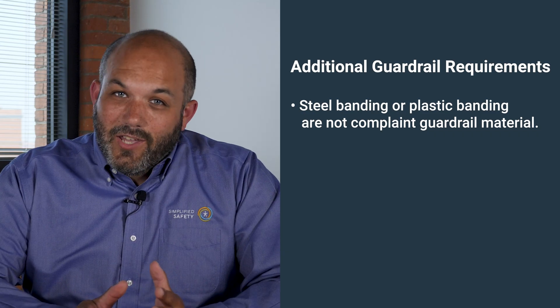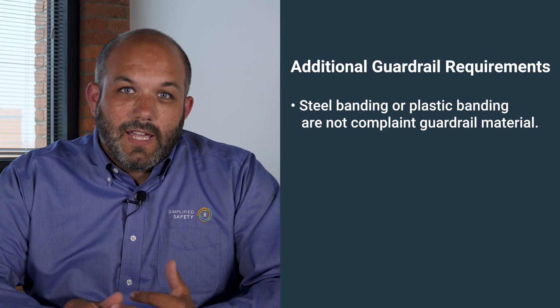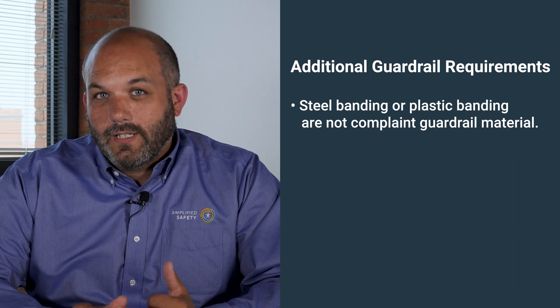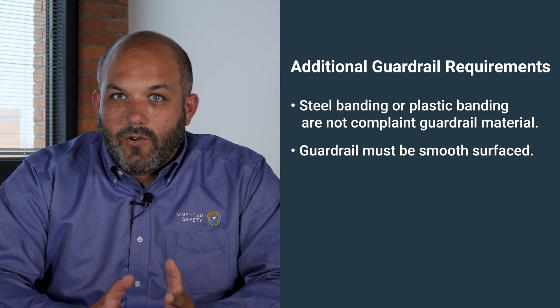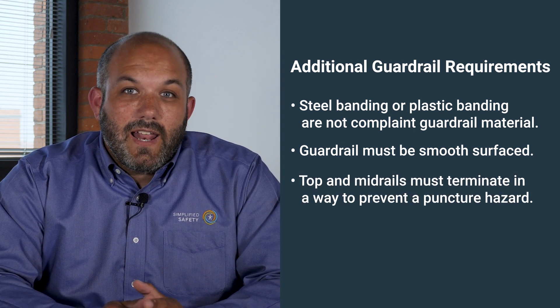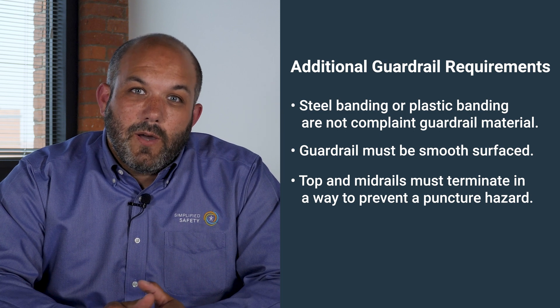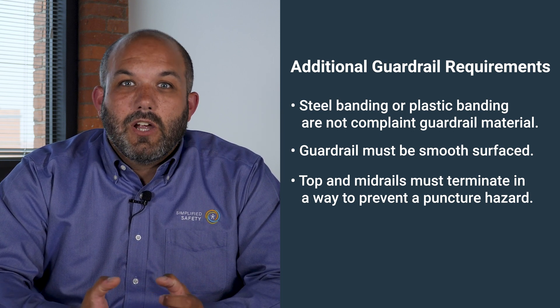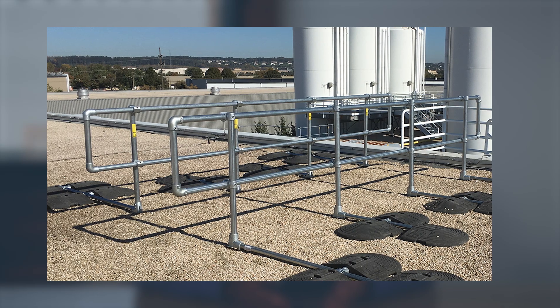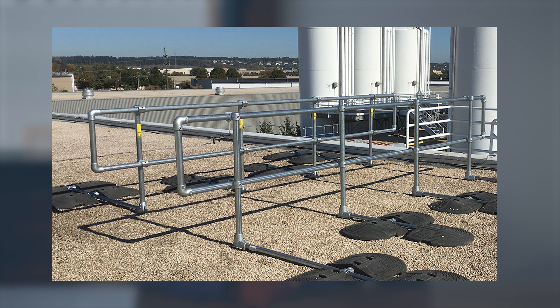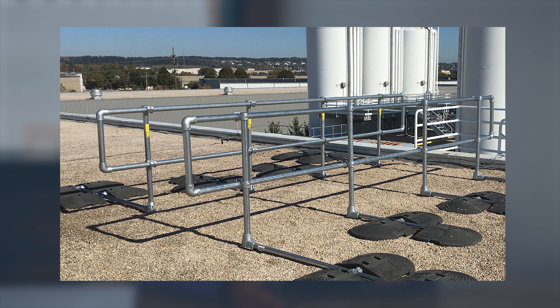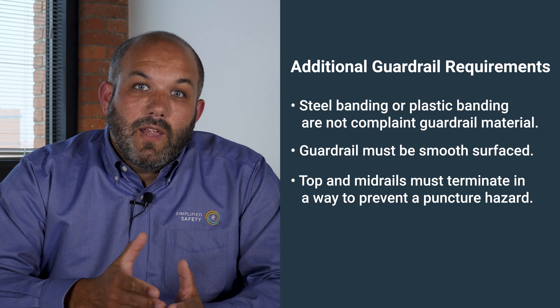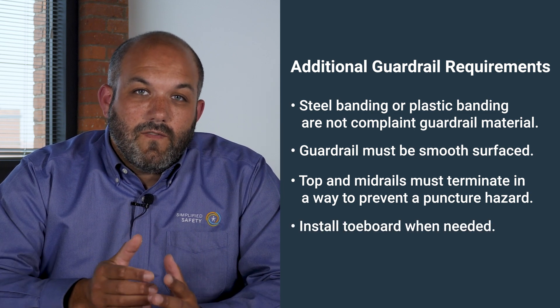Here are a few more details to note about your guardrail. You cannot use steel banding or plastic banding as material for your guardrail. Your guardrail needs to have a smooth surface to prevent any injury to the user, like a laceration or snagging of clothing. Your top and midrails cannot extend past your terminating posts in such a way that it creates a puncture hazard. One way to avoid this is by creating a J-return so that the top rail and midrail loop back on themselves, or simply end the rail right at the terminating post.